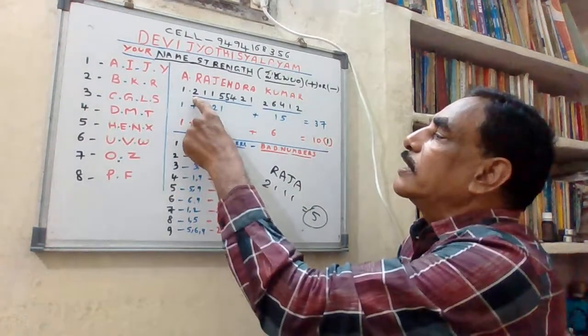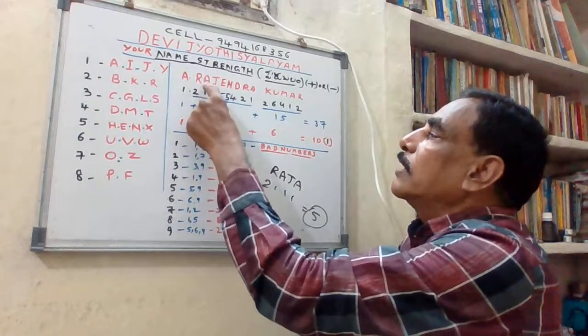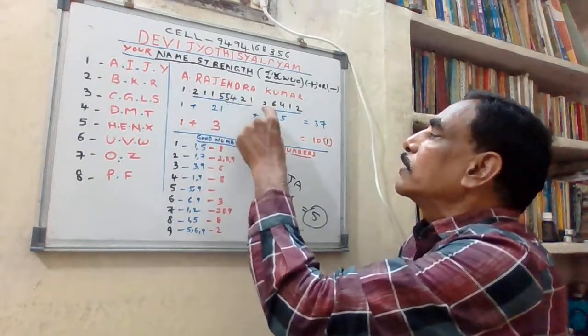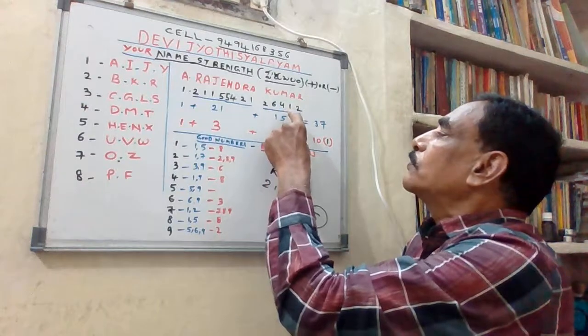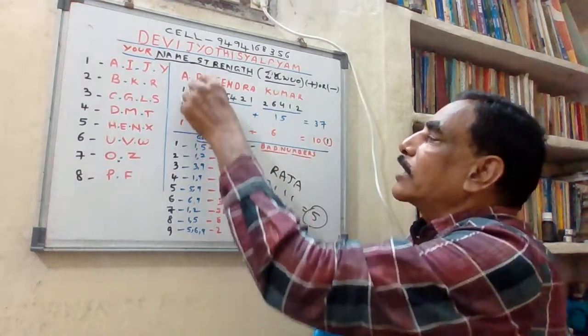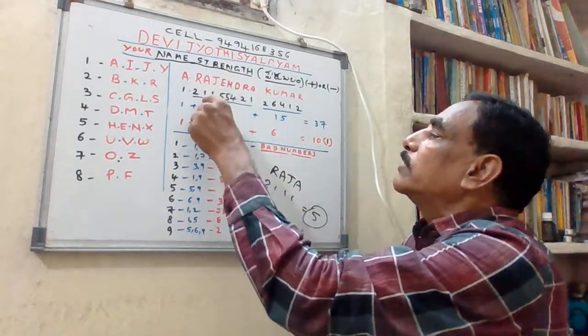A means 1. Rajendra: R=2, A=1, J=1, E=5, N=5, D=4, R=2, A=1. Kumar: K=2, U=6, M=4, A=1, R=2. Like that, we can convert the letters into numbers.